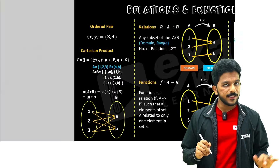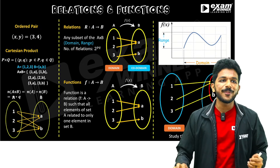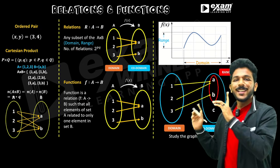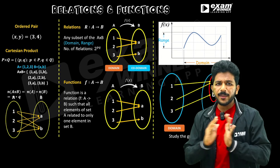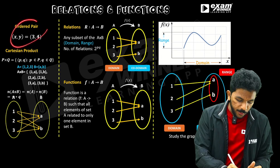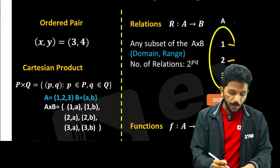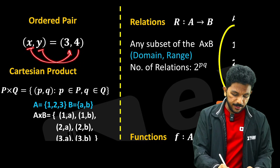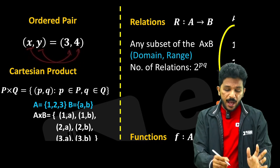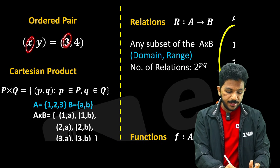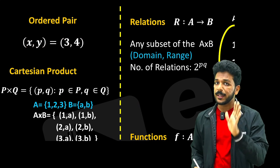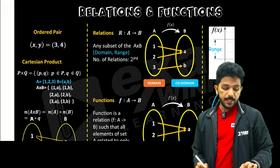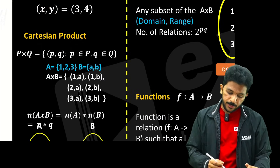Let's see the first chapter, then move to the second chapter. It's a basic chapter. What is an ordered pair? Ordered means there is an order — X is first, Y is second. That order gives a second-order pair. Cartesian product is based on this.